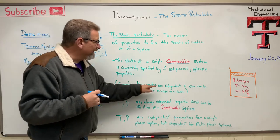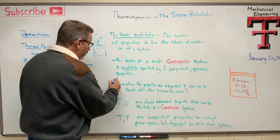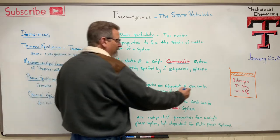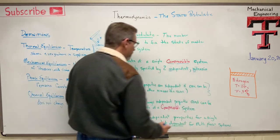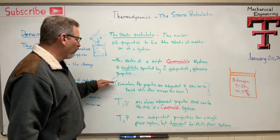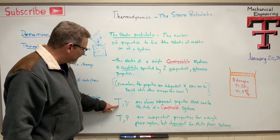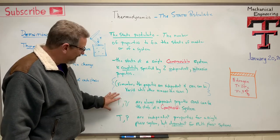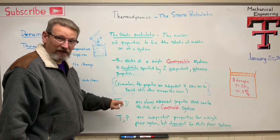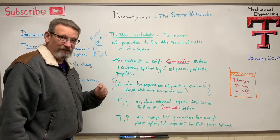Remember the properties are independent. This furthers our definition of an independent variable. The properties are independent if one can be varied while the other one stays the same. So if I have something like temperature and specific volume, if I change this one, that one doesn't change. That makes it an independent variable.